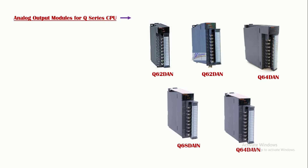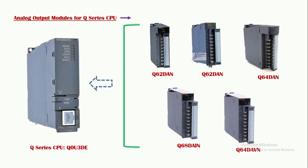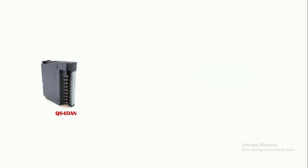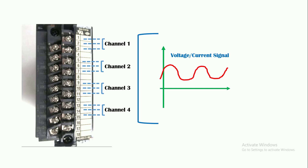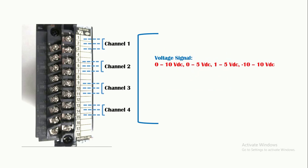For creating analog output signal, there are various analog output modules that can be connected with the Q-Series CPU. The analog output module we are using in this project is module number Q64DAN, which has four analog outputs or channels. Each channel provides both voltage and current signal. For voltage signal, each channel can provide 0 to 10V DC, 0 to 5V DC, or -10 to +10V DC. For current signal, the range is 0 to 20mA or 4 to 20mA.